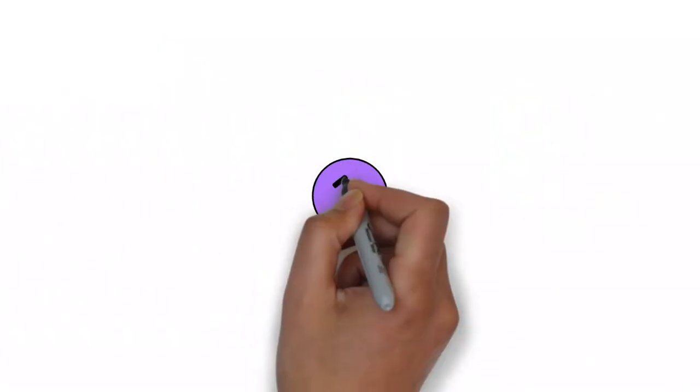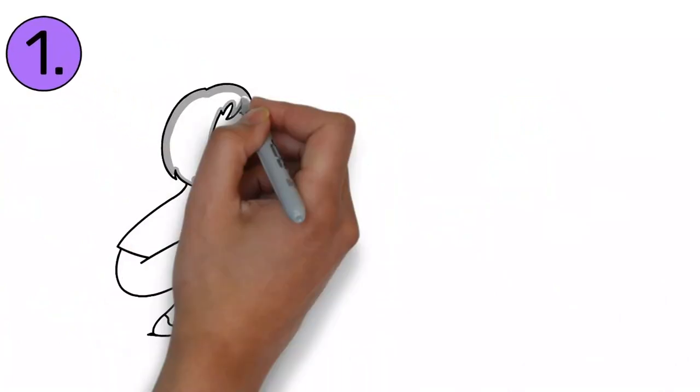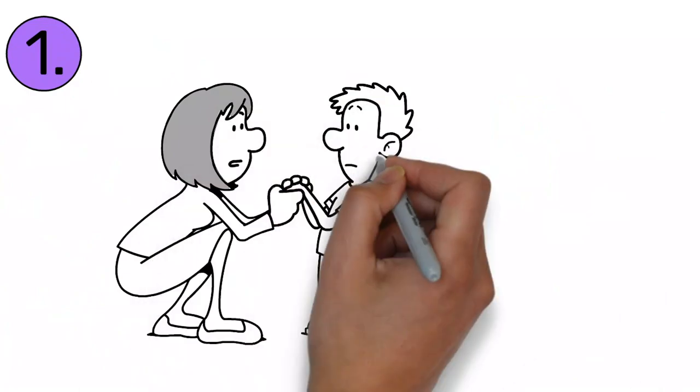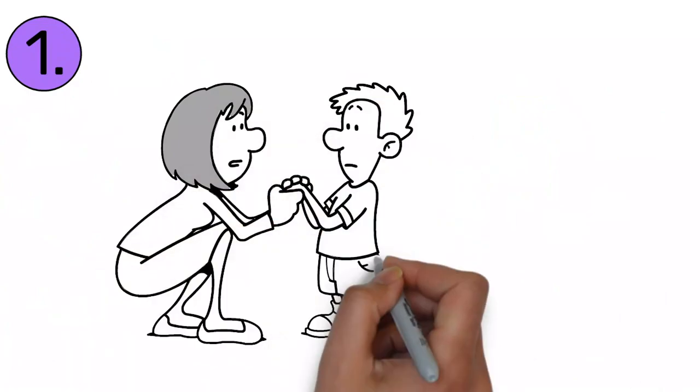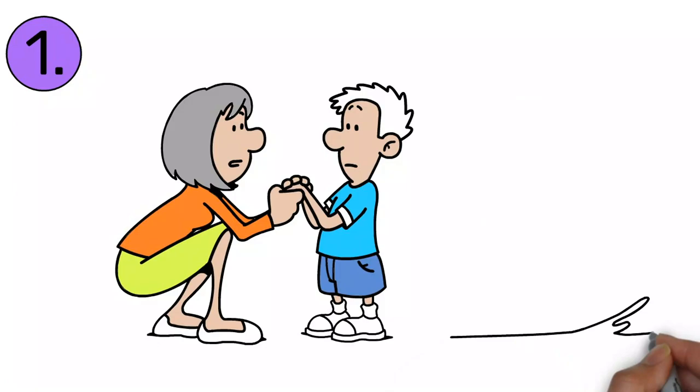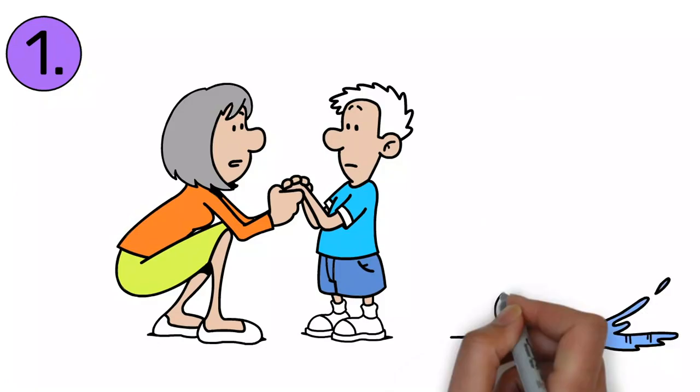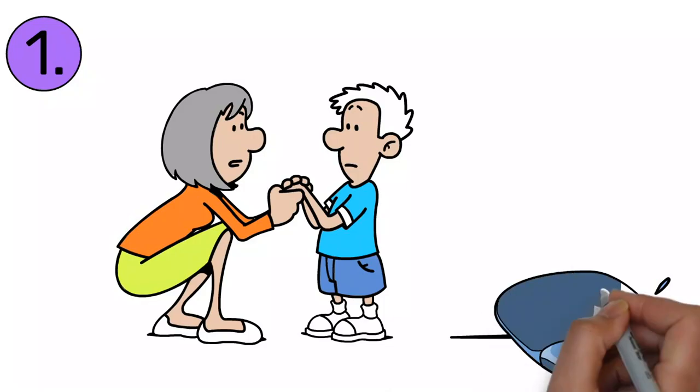Number one, the first tip is to identify the autistic stressor of the bath time and adjust the process to eliminate those potential stressors. So if your kiddo is afraid of falling, maybe it's a little too slick when they get out, get a grippy mat that they can stand on and feel some traction under their feet.